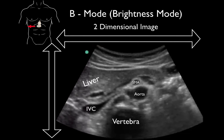In this case, we have the probe placed on the patient's anterior abdomen in the epigastric region, pointed toward the patient's right side. Let's identify some anatomy before we see a live video. We see the liver here. You can see a little bit of the portal system and splenic vein coming across. Deep to that we have the IVC, then the SMA, and deep to the SMA is the aorta. Deep to that we see the vertebral body.